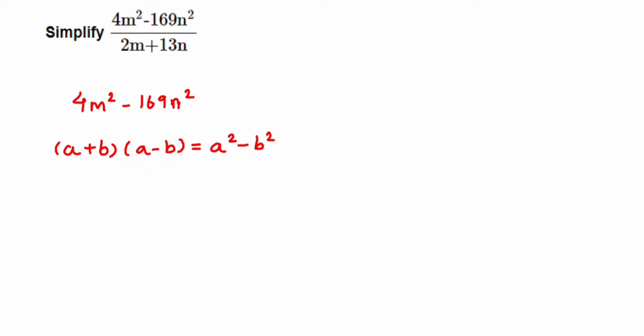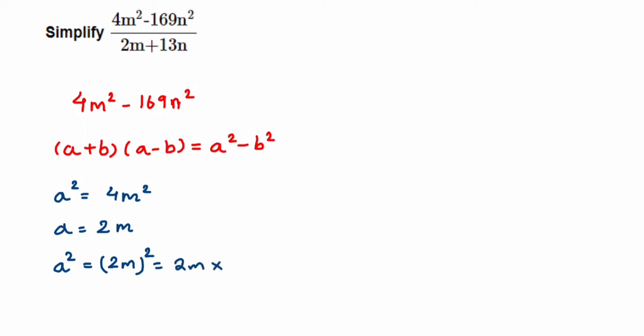So a² = 4m² and b² = 169n². We need to find a and b. For a: a² = 4m², and 4 is the square of 2, so a = 2m. You can verify: (2m)² = 2m × 2m = 4m². So a = 2m is correct.